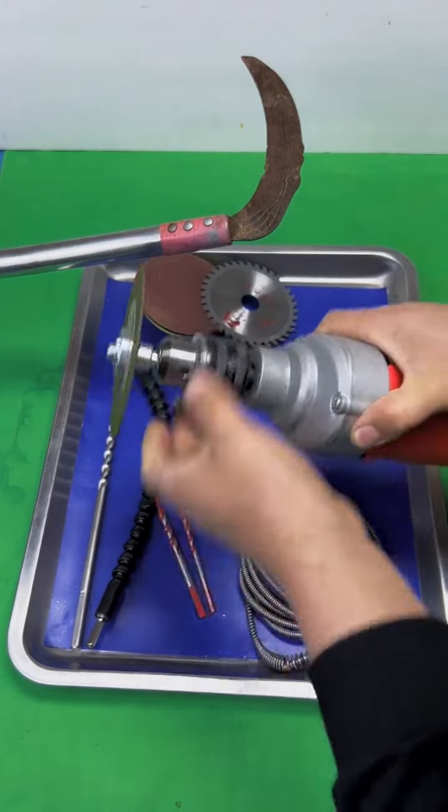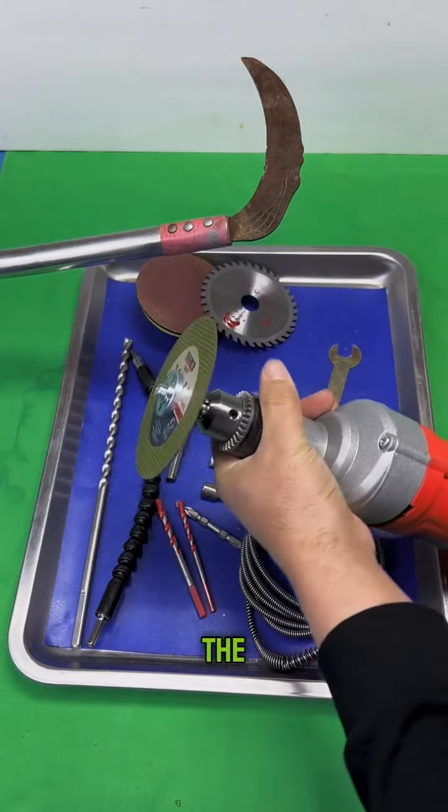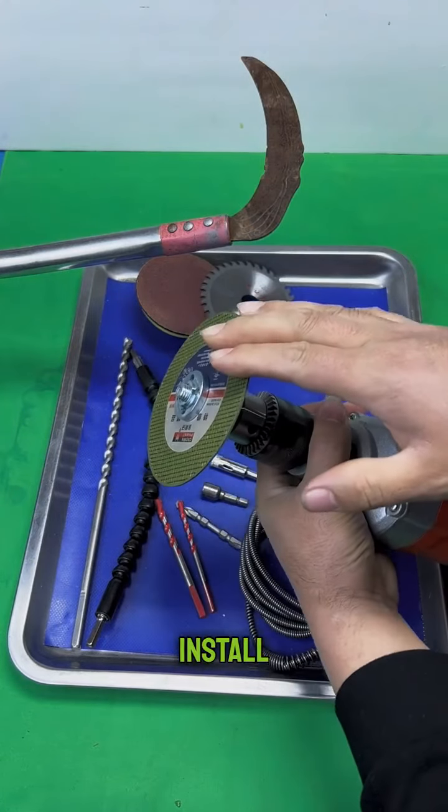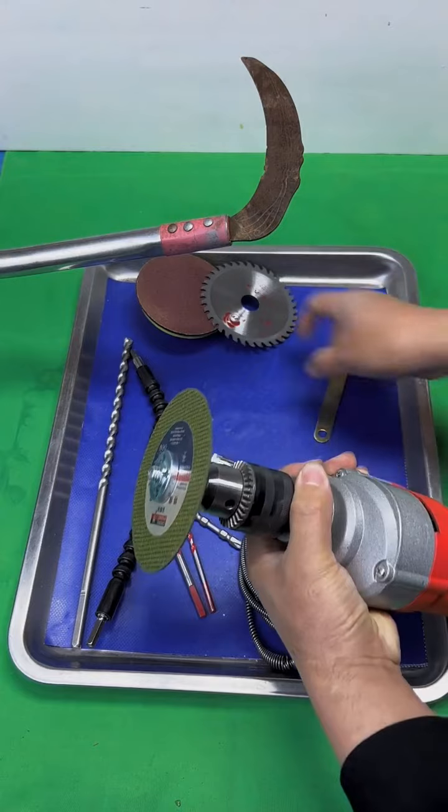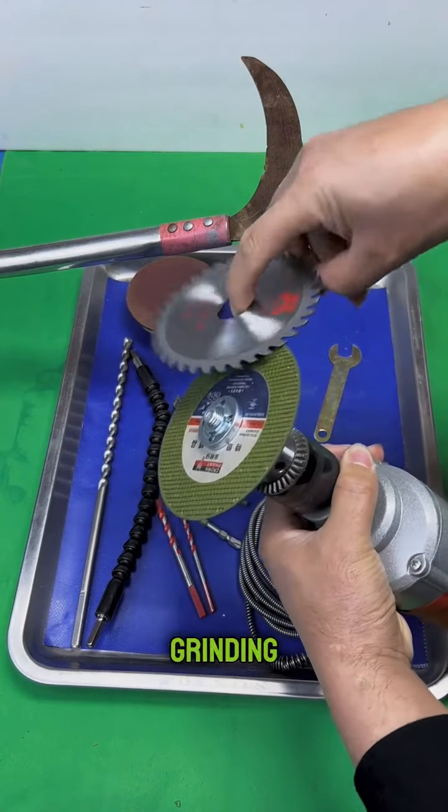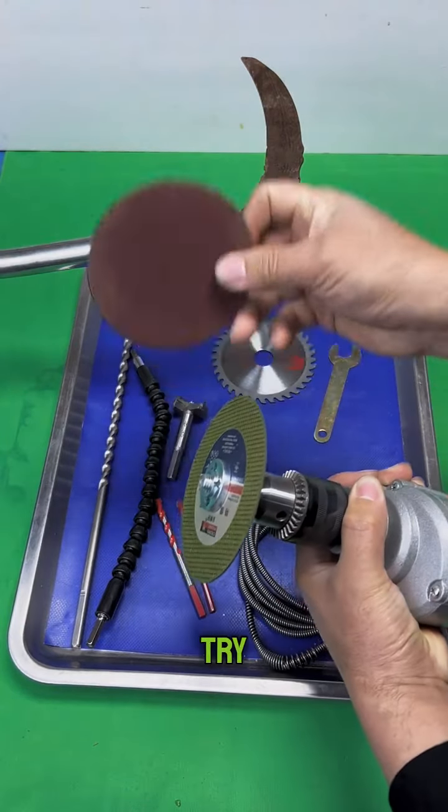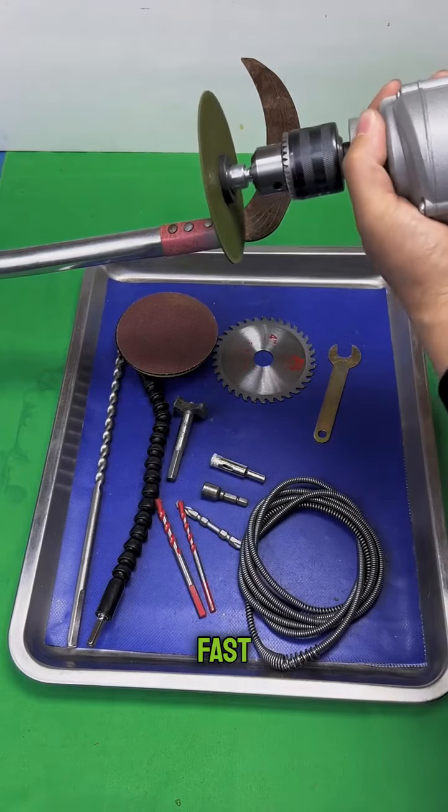A special tool attaches to the drill and becomes a grinder and cutter. Install the cutting disc to cut steel and iron. Install the saw blade to cut wood for polishing and grinding. Let's have the pros try it and see if it's any good. It's quite fast.